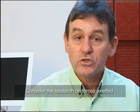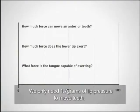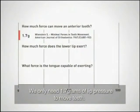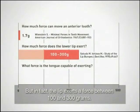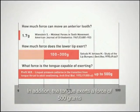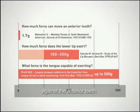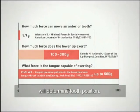Consider the research on forces exerted on the teeth by the lips and tongue. We only need 1.7 grams of lip pressure to move teeth. But in fact, the lip exerts a force between 100 and 300 grams. In addition, the tongue exerts a force of 500 grams against the anterior teeth. So clearly, the function of the lips and tongue will determine tooth position.